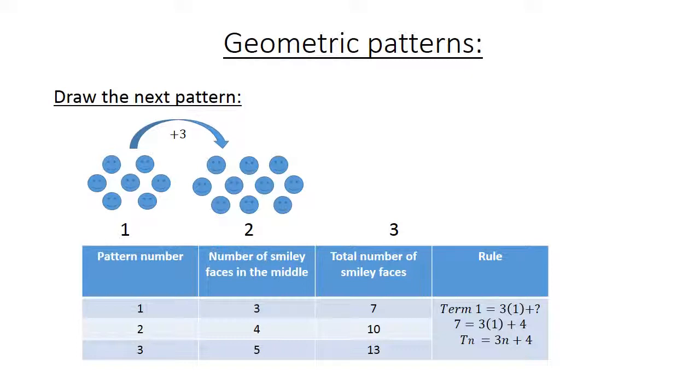The rule will be: Tn equals 3n plus 4. For example, term 1, we have 3 times 1 plus 4 equals 7.